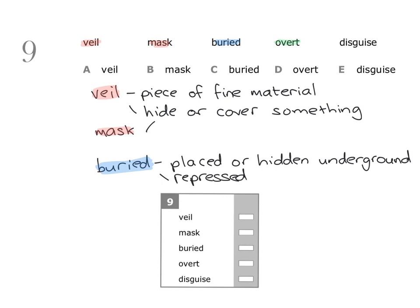Then we have the word overt, and overt means done or shown openly. So an overt act of aggression is an act of aggression that is done openly, not hidden.